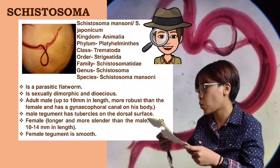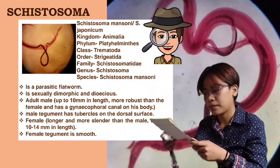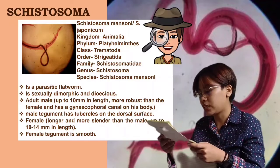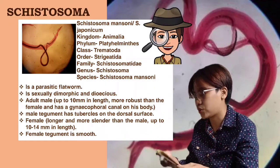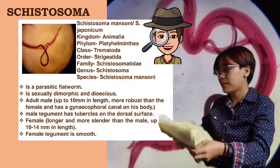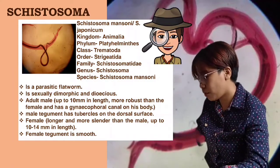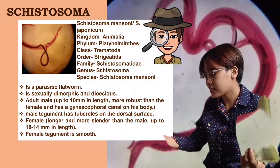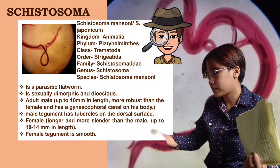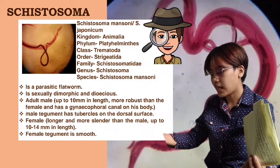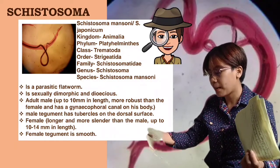Schistosoma mansoni is a parasitic flatworm. It's actually dimorphic and dioecious. Dimorphic means the existence of two different forms as of color or size.